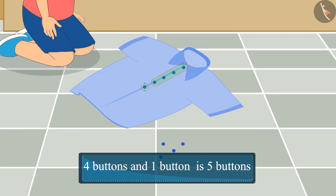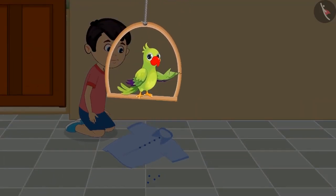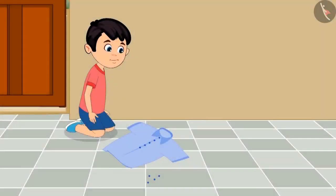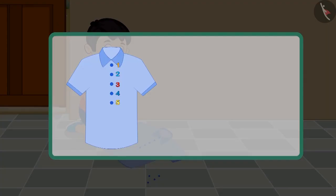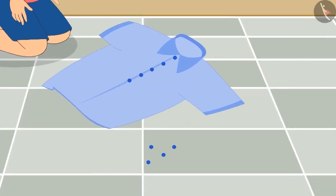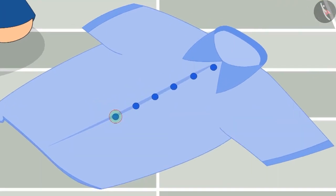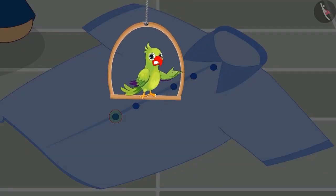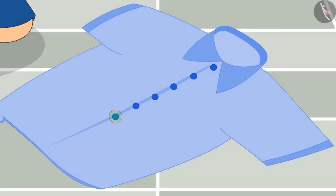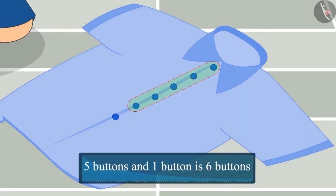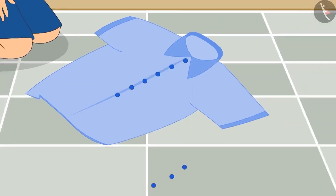Now Joto has stitched one more button on his shirt — four buttons and one more button is five buttons. Now count and tell how many buttons are stitched on Chotu's shirt. Yes, you are absolutely correct: a total of five buttons. Through hard work Chotu stitched one more button after five — five buttons and one more button, there are a total of six buttons stitched on Chotu's shirt.